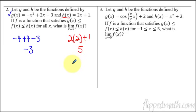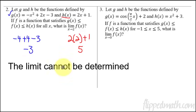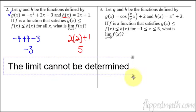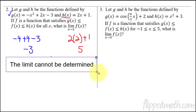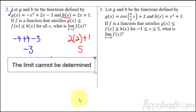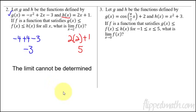So we actually cannot figure out what the limit is exactly, because we don't know where it falls in there. There are infinite numbers between negative three and five to choose from. So what we're going to say for this problem is: the limit cannot be determined. Based on the squeeze theorem, there's not enough information here.